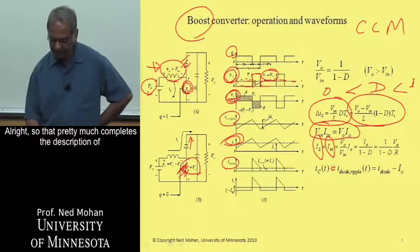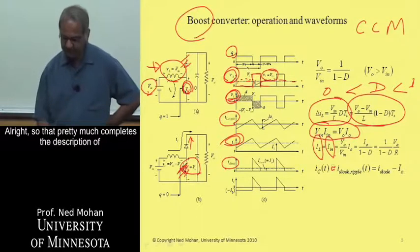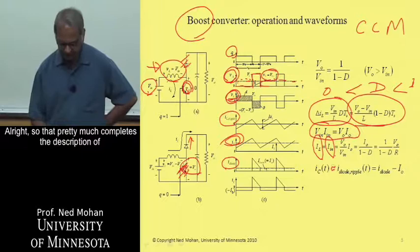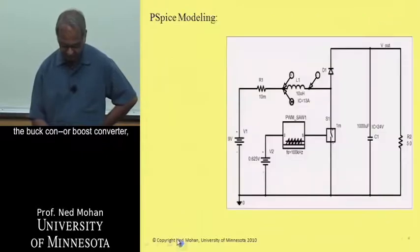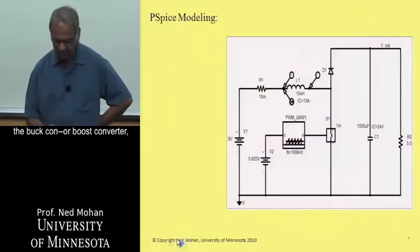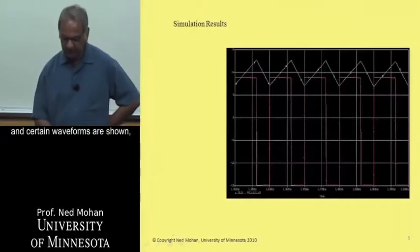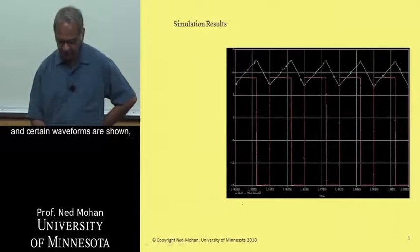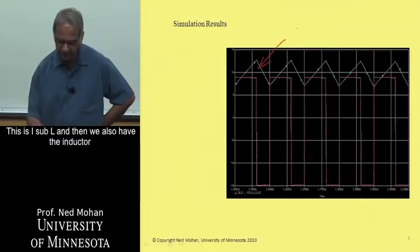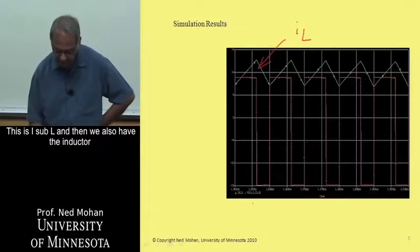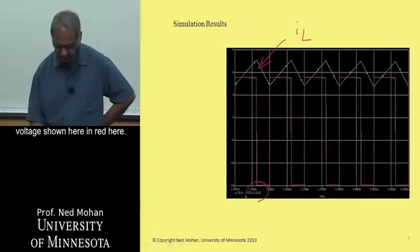So that pretty much completes the description of the boost converter in steady state. We can model it in P-spice, as shown here, and certain waveforms are shown. The inductor current is shown in green here. So this is I sub L, and then we also have the inductor voltage shown here in red.